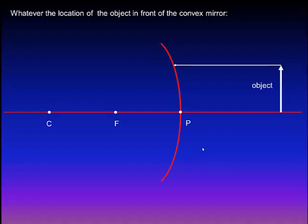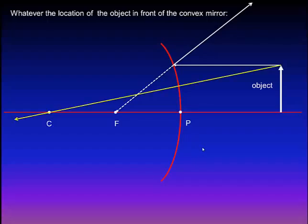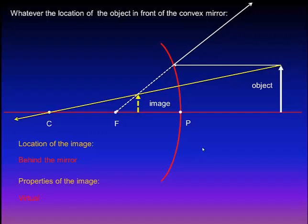We will draw the first light ray parallel to the principal axis. The convex mirror is a diverging mirror — it separates its light rays. So this light ray will be reflected away from the mirror, but its extension will pass through the focus. The second light ray will pass through the center of mirror curvature and will reflect on itself. The point of intersection between the extensions of the two reflected light rays will be the image. As you can see, the image is formed behind the mirror and is virtual — it cannot be received on a screen — erect or upright, and small or minimized.